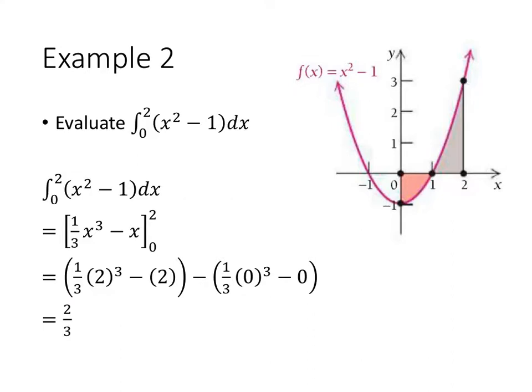Now let's think for a second what this is telling us. This is telling us that the positive area minus the negative area works out to be 2 thirds. Another way to think about that is that there's a little bit more gray area than there is pink area. Specifically, there's 2 thirds of a square unit more gray area than pink area. This gives us net area or signed area.